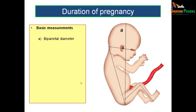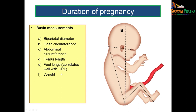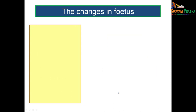The basic measurements used to calculate the duration of pregnancy are biparietal diameter, head circumference, abdominal circumference, the length of the femur, and the foot length — which correlates with crown rump length — and the weight of the fetus. These measurements are obtained during ultrasound examination. Biparietal diameter is the imaginary distance between the parietal prominences.